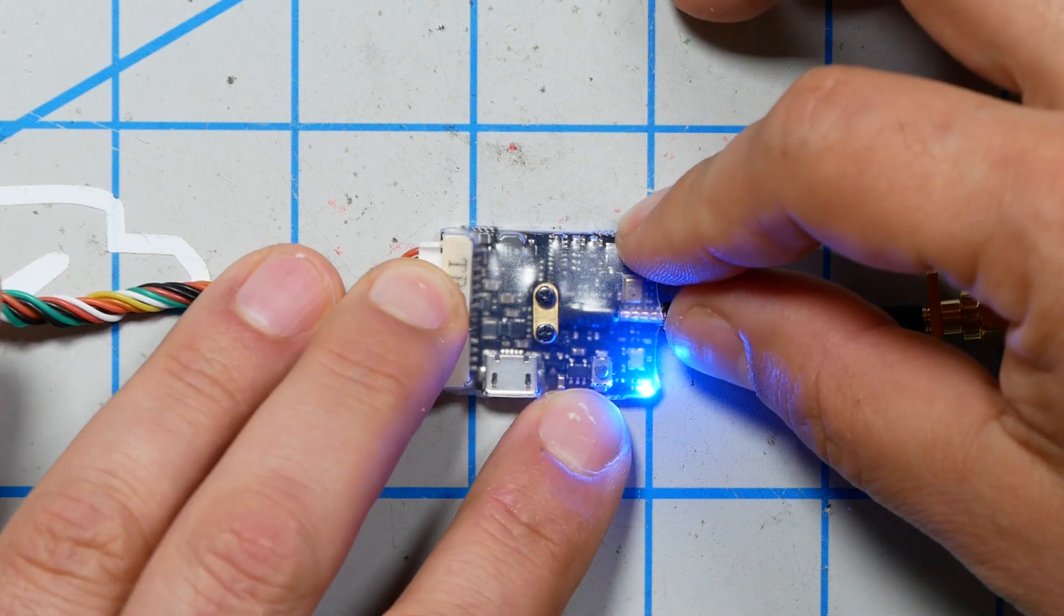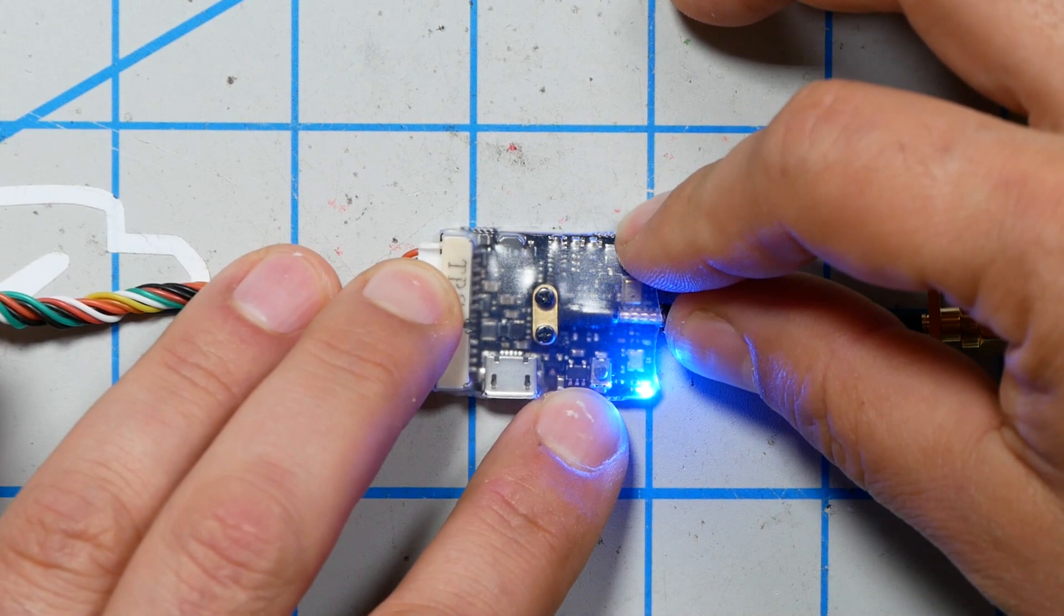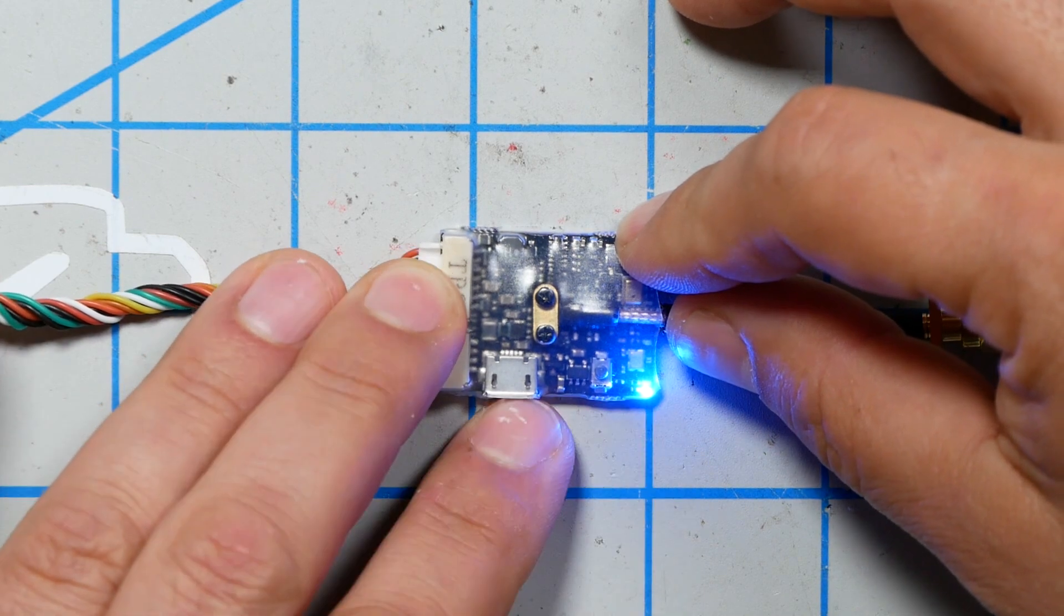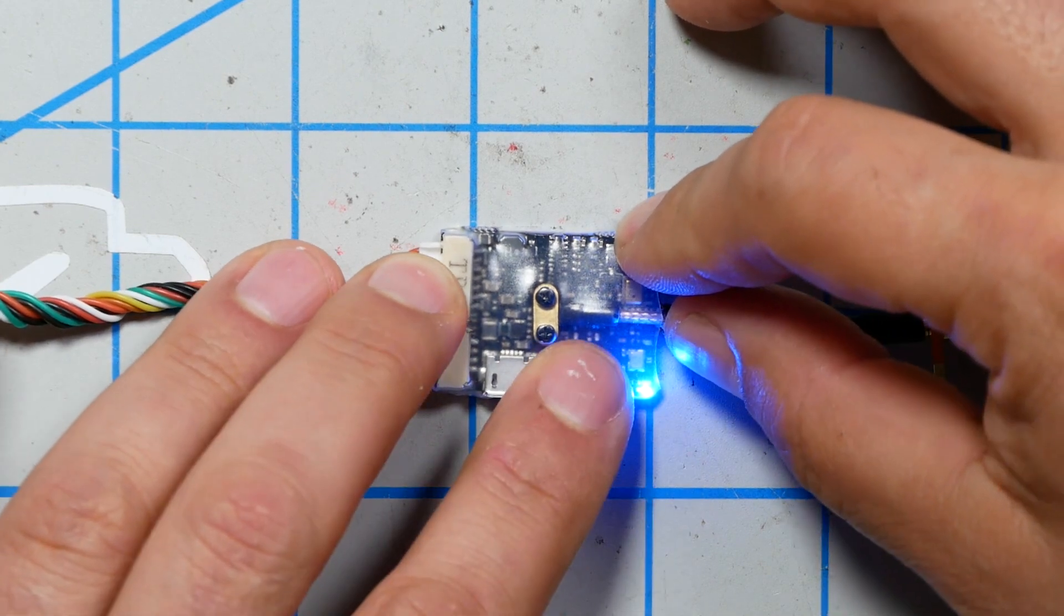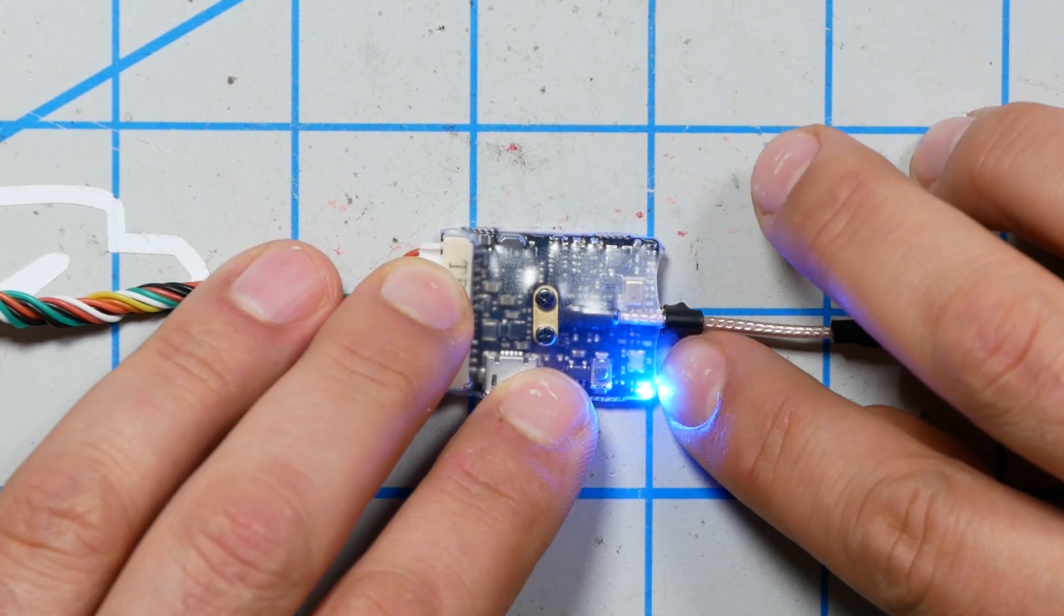What we're going to need to do is enter the menu by holding down the button for three seconds. On older Unify's, you may be used to holding down the button and waiting for the red light to turn on.